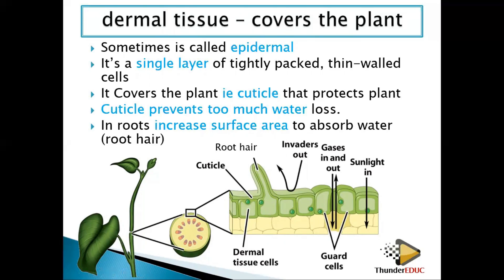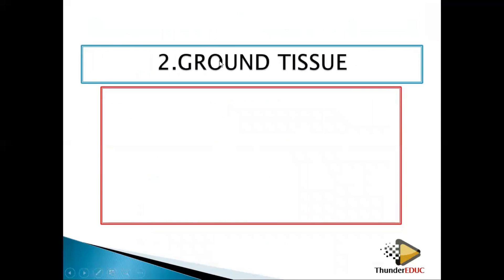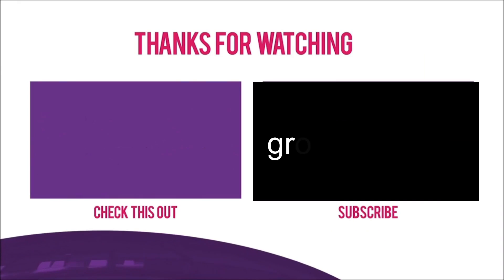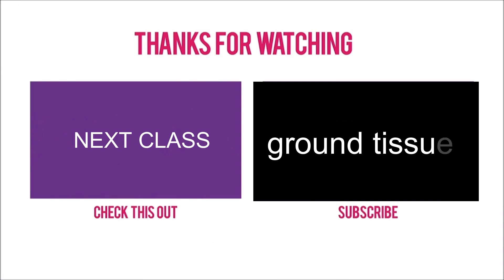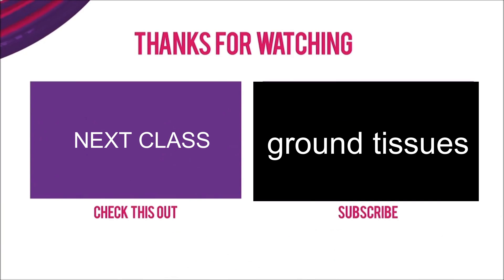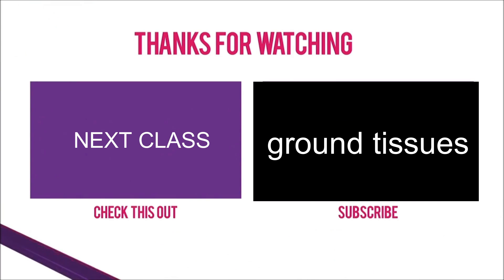Ground tissue includes parenchyma, collenchyma, and sclerenchyma. Parenchyma is a key component of ground tissue and can be found filling the space between the epidermal and vascular tissues.